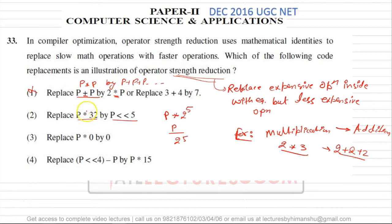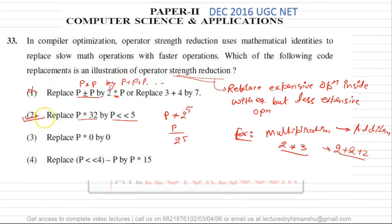We can replace division with right shift operation, and multiplication with left shift operation, because shift operation is less expensive than multiplication and division. We have special hardware units that can simply perform the shift operation, but to multiply two numbers we have to perform more than two operations in the ALU. So replacing multiplication with shift is a valid strength reduction.